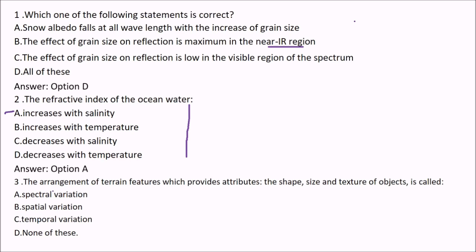Next question: the arrangement of terrain features which provides attributes — shape, size, and texture of an object — is called what? The options are spectral variation, spatial variation, or temporal variation. The answer is spatial variation, because we are talking about the size, shape, and texture.